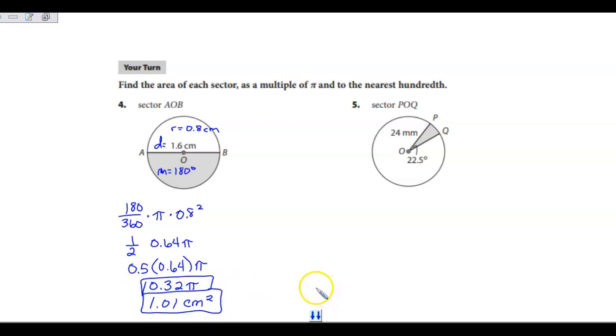Okay, find the sector area POQ. Identify the radius and identify the measure of the central angle. We find that 24 is my radius, and my angle measure for my arc is 22.5, so m is 22.5.